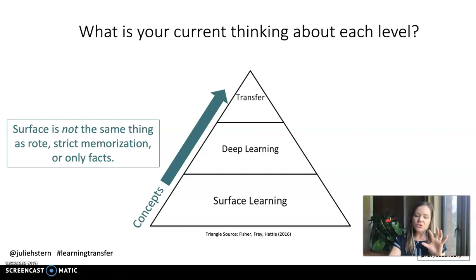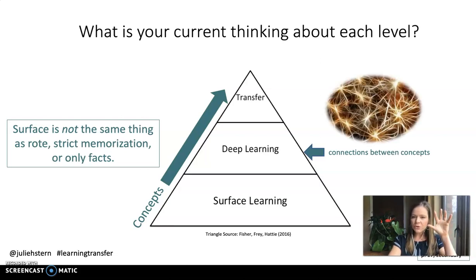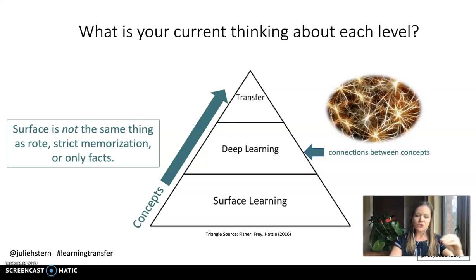Concepts play a role throughout, from surface level learning into deep learning. Surface level learning is when students start to explore concepts individually, and then deep learning happens when students start to make connections between concepts. They start to build that organizational structure in their brain — that's when we get to deep learning.